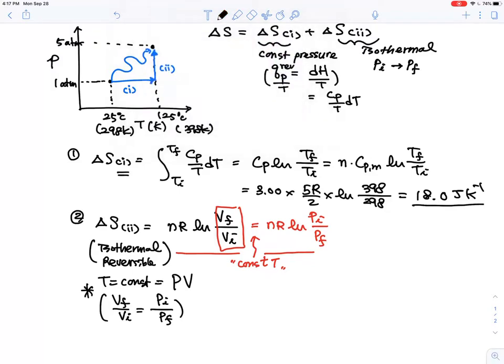This is for isothermal because it's still, it is a constant temperature isothermal process. So having said that, we are going back to n is 3.00R. What is my initial pressure? 1.0. Final pressure, 5.0. So you're going to put that together to find out what's the value, and that is minus 40.1 joules per Kelvin.